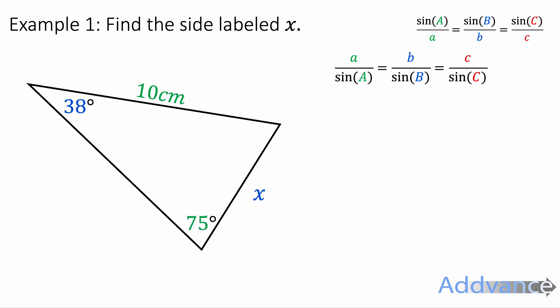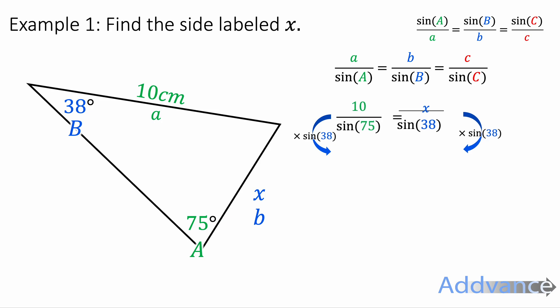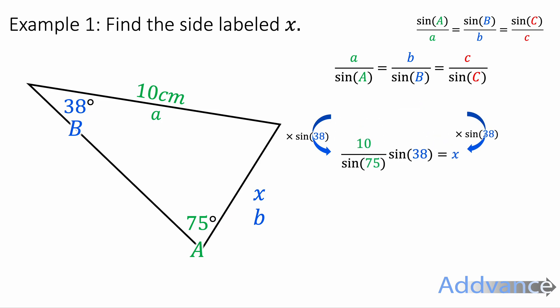We're going to label this a, a, b and b. And we're going to substitute those values into the version of the sine rule for finding lengths. We've substituted them in and now we can rearrange and solve. We get rid of the divide by sine 38 by multiplying by sine 38, and we get 10 over sine 75 times sine 38 equals x.